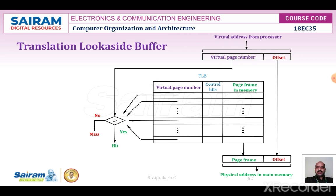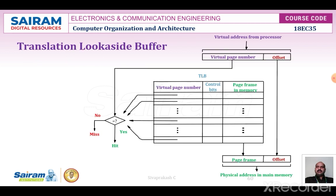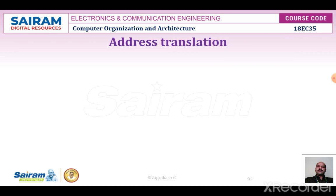Associative mapping is used in the TLB. The higher-order bits of the virtual address generated by the processor select the virtual page number, and these bits are compared to the virtual page numbers stored in the TLB. If there is a match, a hit occurs and the corresponding address of the page is read. If there is no match, a miss occurs and the page table in main memory must be consulted. Set-associative mapping TLBs are found in commercial processors.